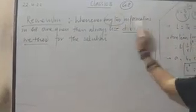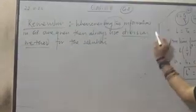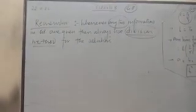Here in GP, whenever any two informations in GP are given, then always use division method for the solution. What is that here?